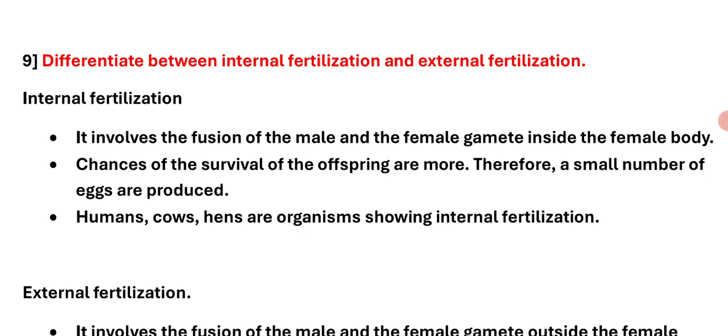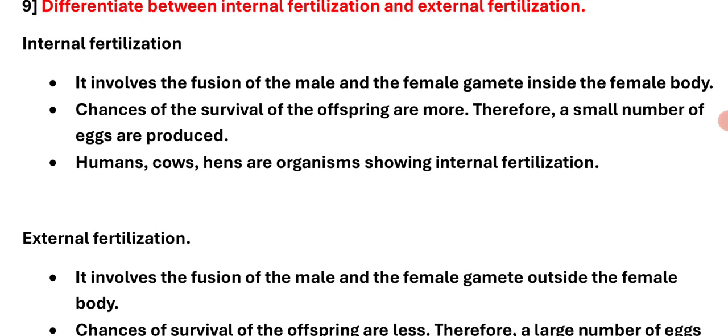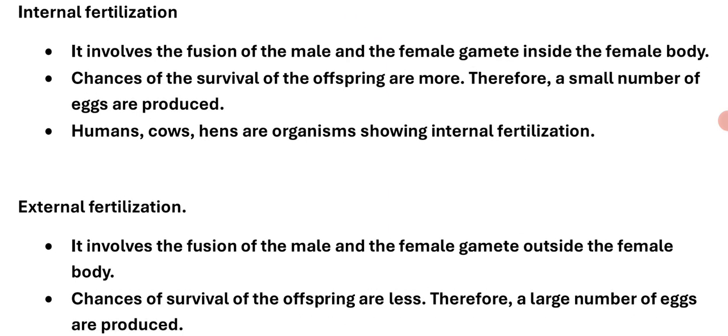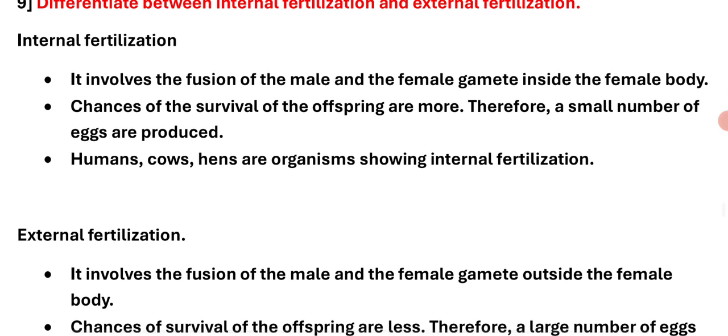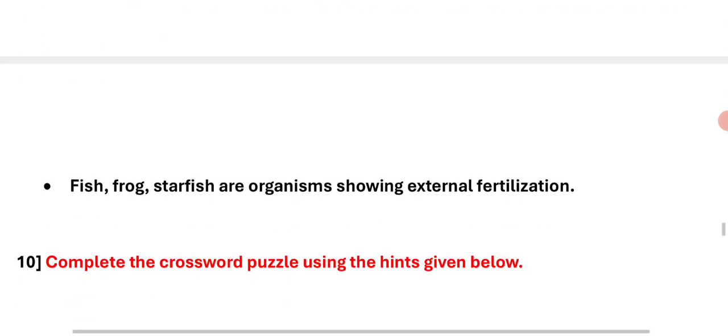In internal fertilization, the chance of survival of offspring is more, therefore a small number of eggs are produced. In external fertilization, the chance of survival of offspring is less, therefore a large number of eggs are produced. Examples of internal fertilization: women, cows, hens. Examples of external fertilization: fish, frog, starfish are organisms showing external fertilization.